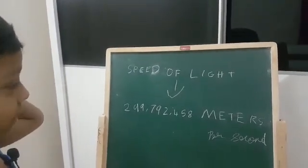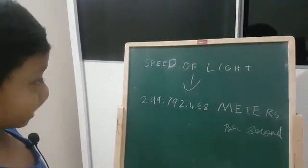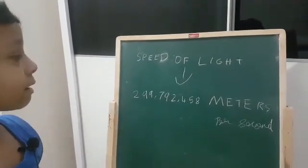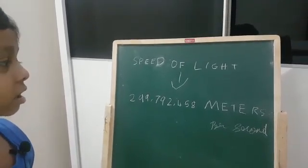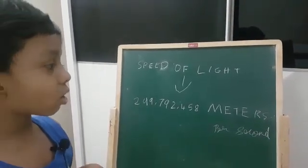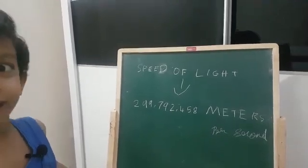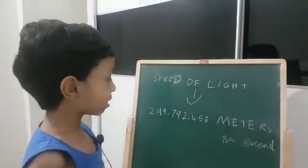So, what is the speed of light? The speed of light is 209,792,458 meters per second. My gosh, that's a big number.